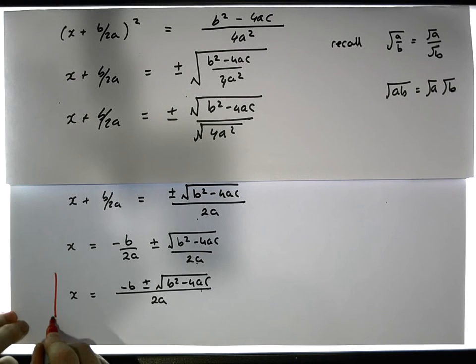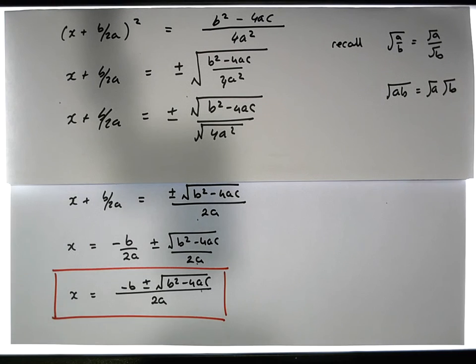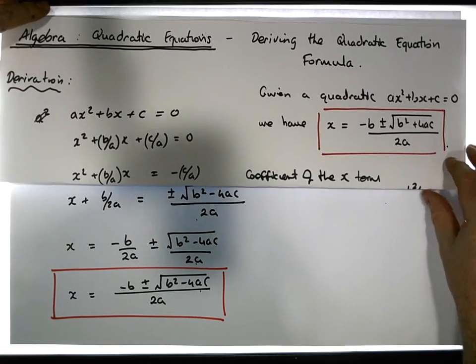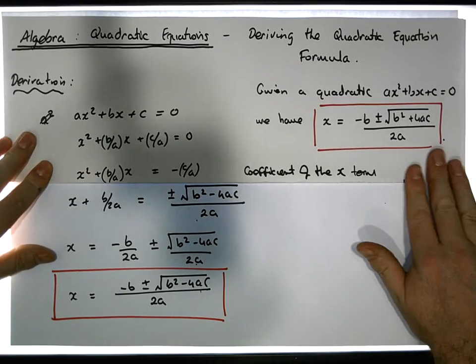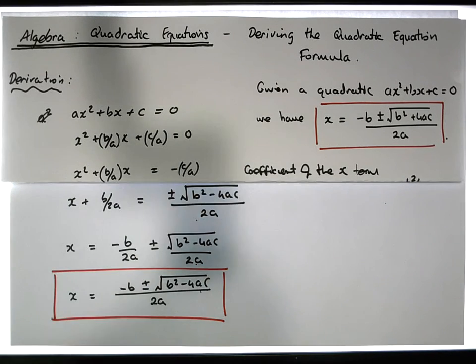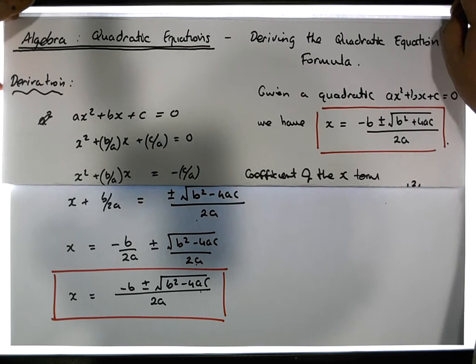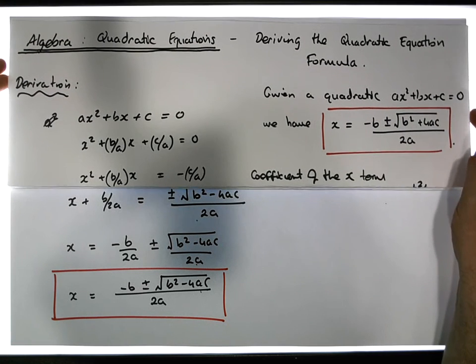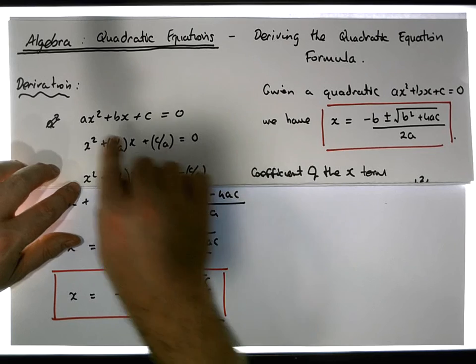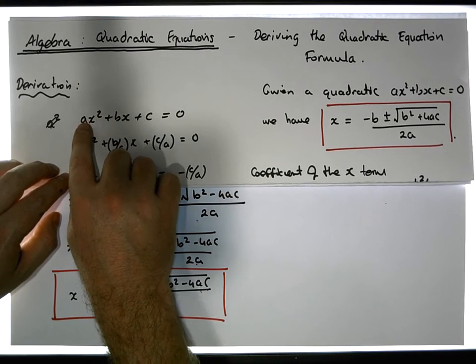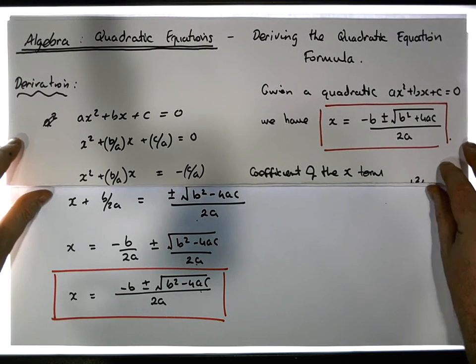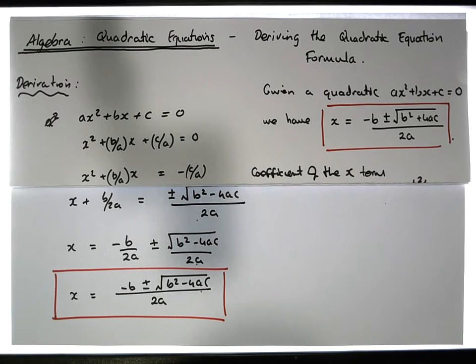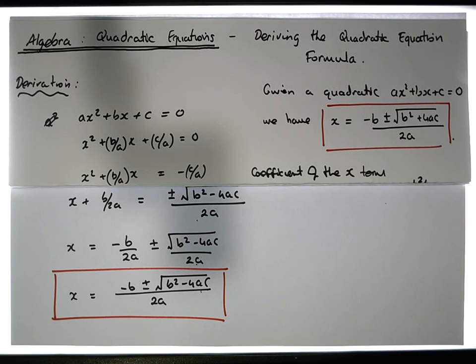This is our classic quadratic formula — exactly what we required from the start. We derived it through completion of the square. There was nothing unusual going on; the only thing slightly involved was that we didn't use specific values for the coefficients — we let them be a, b, and c to generalize, and we solved the problem using completing the square.